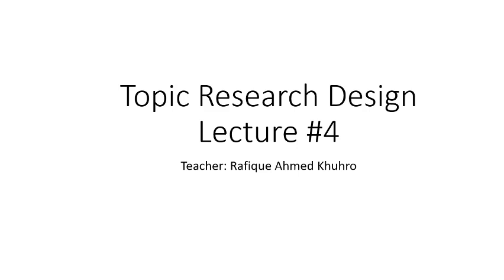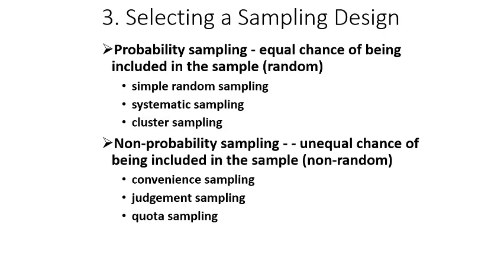Last time we were discussing population and sampling techniques within research design. As I told you, in the next lecture we will cover sampling techniques in detail. In this lecture we will cover only probability sampling techniques. We discussed two main techniques in sampling procedure — probability and non-probability — and in this lecture we are going to cover only probability sampling techniques.